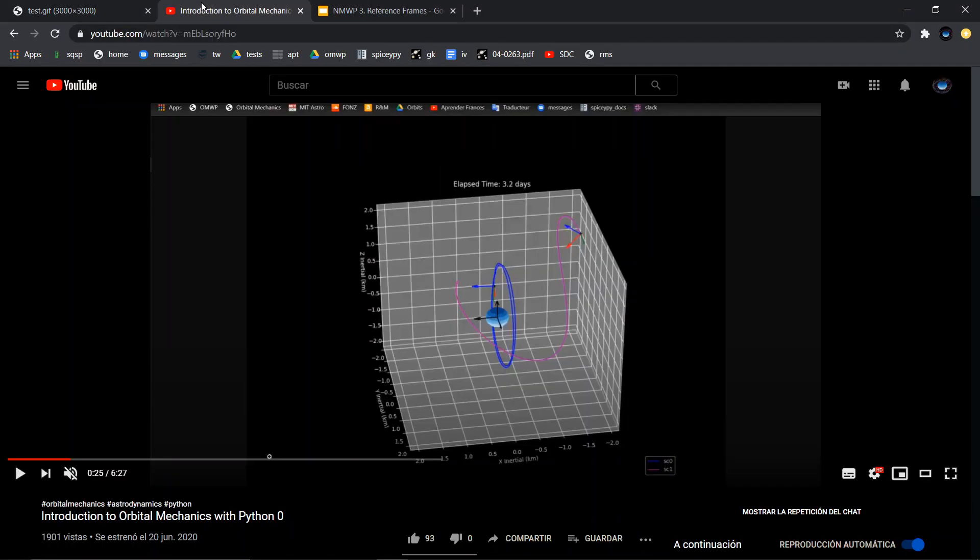Another example of reference frames are these two spacecraft orbiting an asteroid. The black arrows represent an inertial frame centered at the center of the asteroid, and the two spacecraft body fixed reference frames are rotating as they move around the asteroid perturbed by solar radiation pressure.